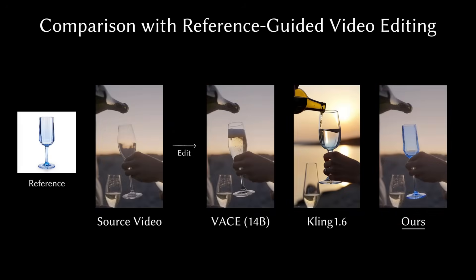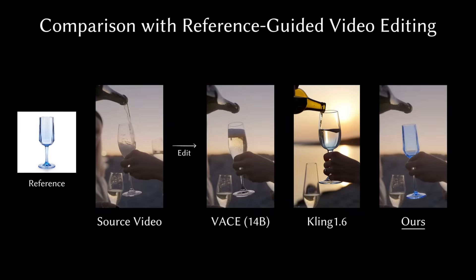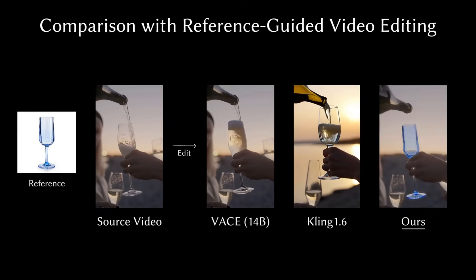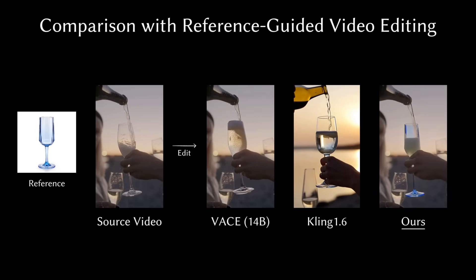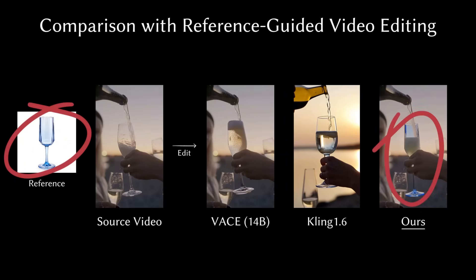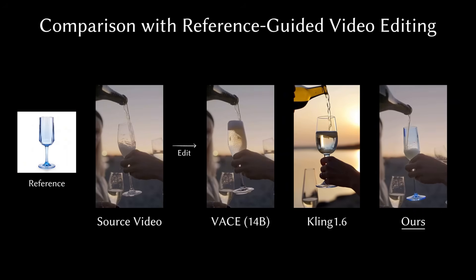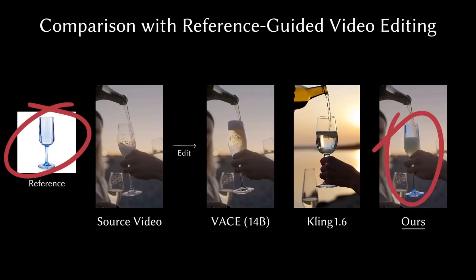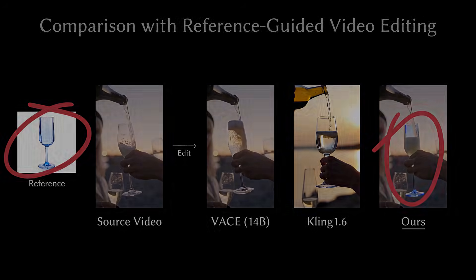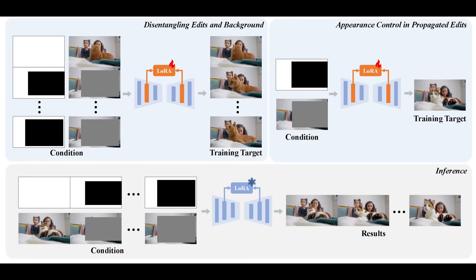Look at this insane pouring example. The other AIs fail completely — the glass looks all messed up — but LoRaEdit's result is flawless. The reflection, the liquid, the glass color — everything is perfect. So how does it pull this off?